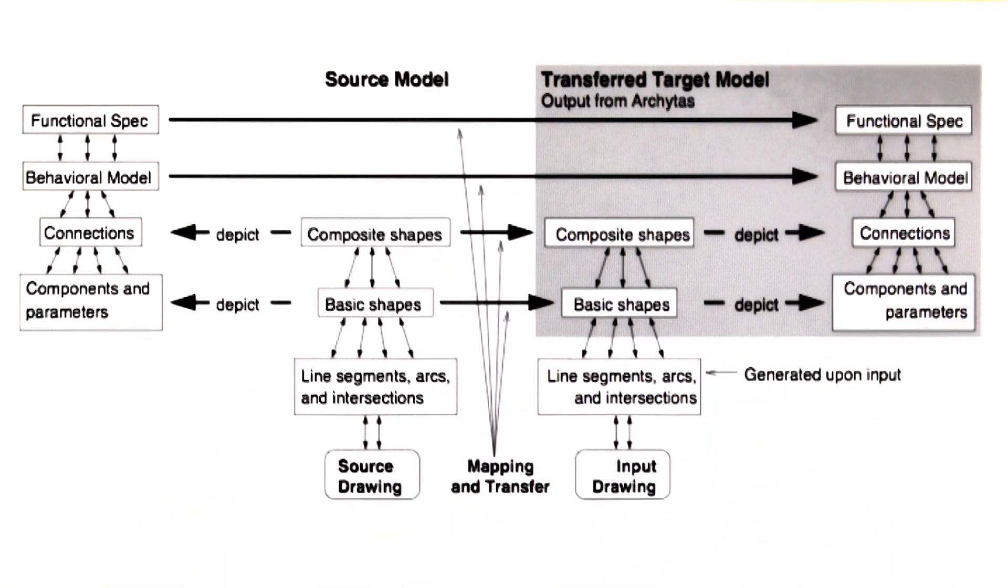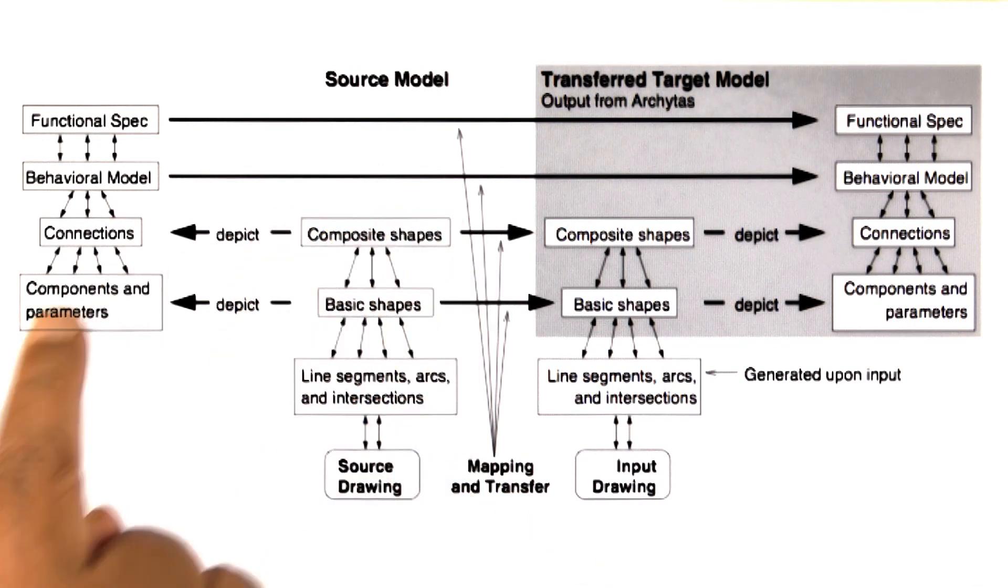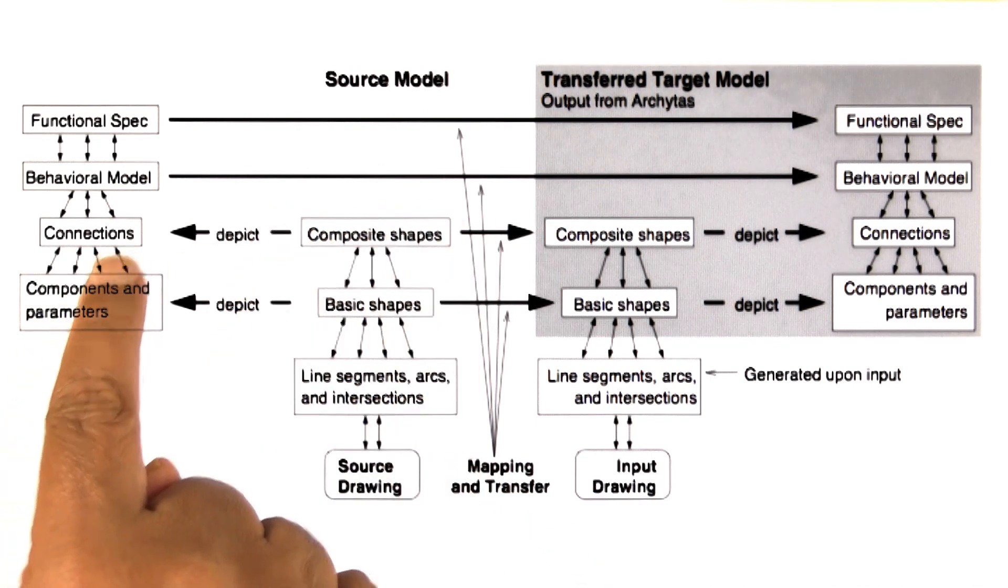This is how Archytos worked. It began with a library of source drawings. These were drawings that they already knew about. For each drawing that they already knew about, it already had done the segmentation. These basic shapes, for example, might be things like circles. And the composite shapes, which were then labeled, like piston and cylinder.